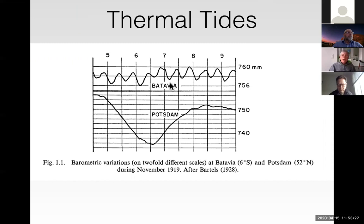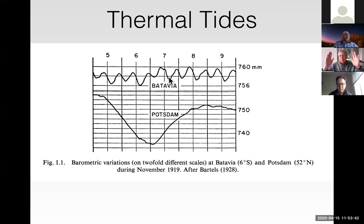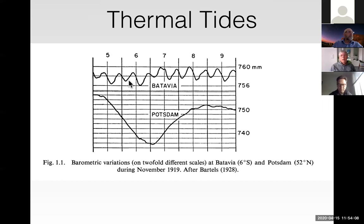If you heat up the air, the pressure goes up. You'd expect the air to move away from that point — a horizontal pressure gradient moves air away from the heated region. But the pressure on the ground is just the integrated weight of all the air above you. So if you increase the temperature, the air moves away, the integrated weight goes down, and underneath the hot spot you actually have a decrease in pressure. If the hot spot is at noon, you get a minimum in barometric pressure at noon and a maximum at morning and evening — that's the semi-diurnal thermal tide.